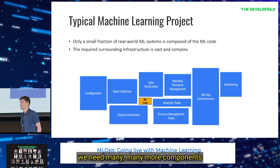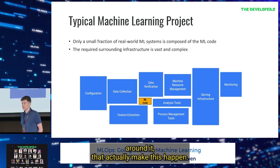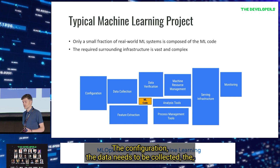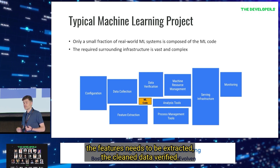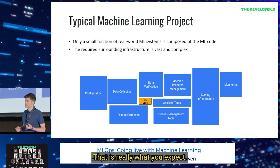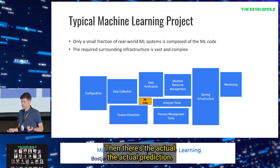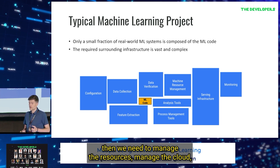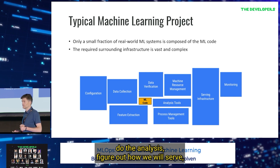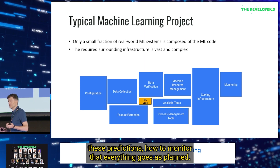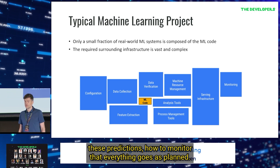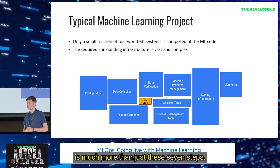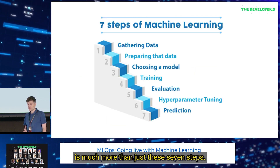We need many more components around it to actually make this happen: configuration, data collection, feature extraction, data cleaning, data verification, resource management, cloud management, analysis, figuring out how to serve these predictions, and how to monitor that everything goes as planned. So building a machine learning system is much more than just those seven steps.